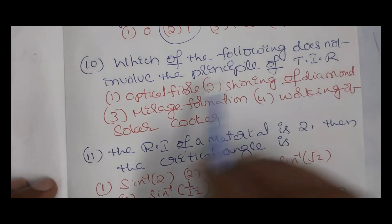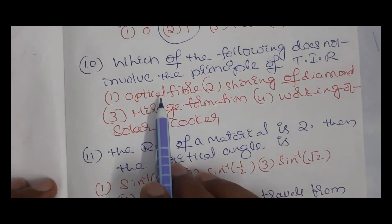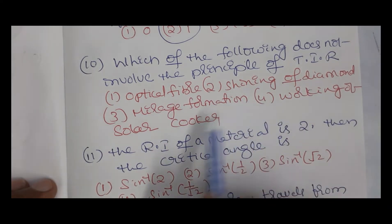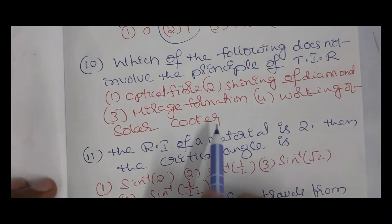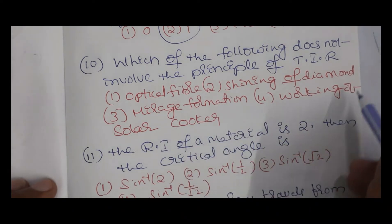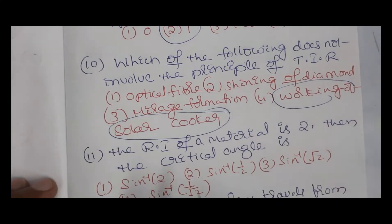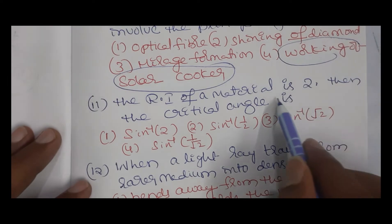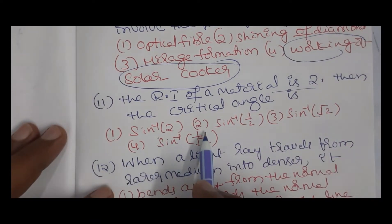Question 10: which of the following does not involve the principle of total internal reflection? Optical fiber works on TIR; sparkling of diamond happens by TIR; mirage formation also occurs by TIR. Working of a solar cooker does not work on the principle of total internal reflection — that is the answer.